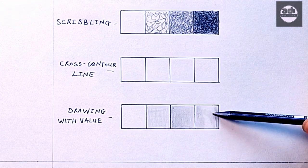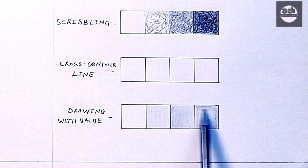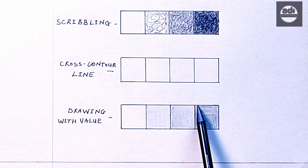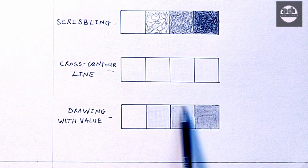The strokes you use may be any of the above, hatching, scumbling, etc. I call it drawing with value and I usually blend the graphite or charcoal in later.